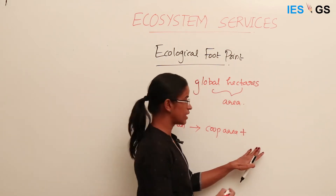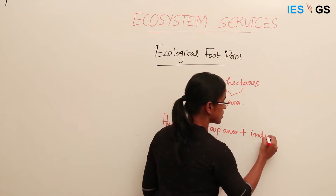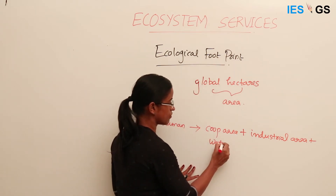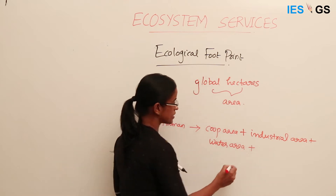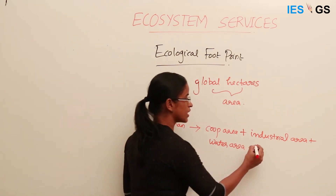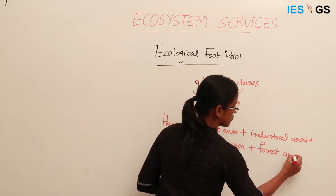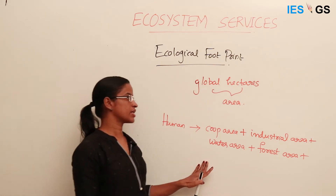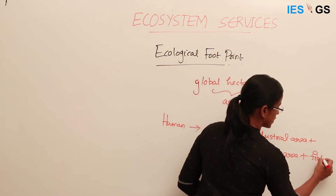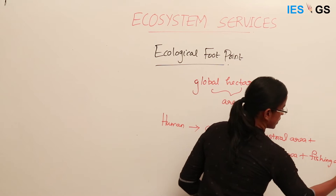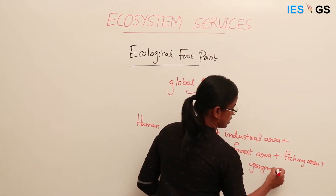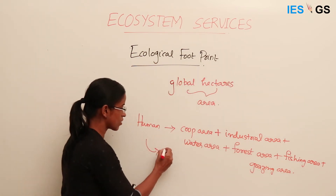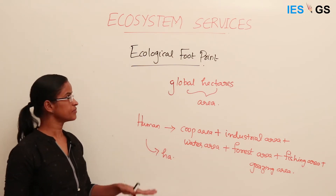He also needs some industrial outputs, so he will consume some industrial area. Plus he consumes water, so he needs some water area. He emits carbon dioxide, so we need forest area to absorb that carbon. He may also need fish and meat, so he consumes fishing area and grazing area. The sum of all this constitutes how many global hectares this person is consuming in his lifetime.